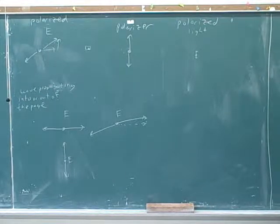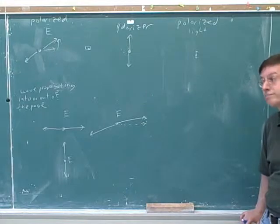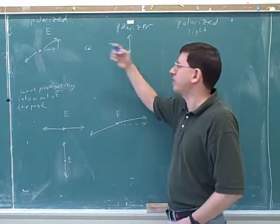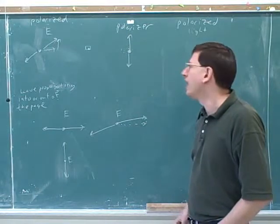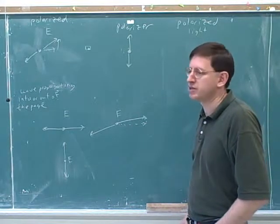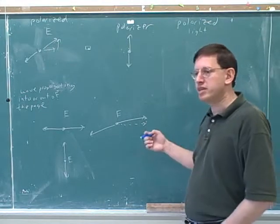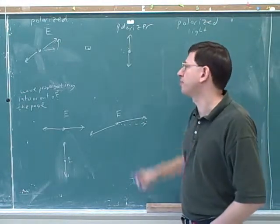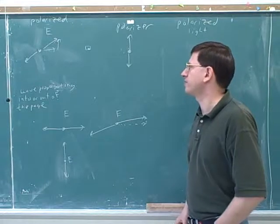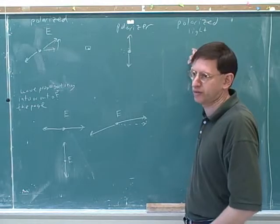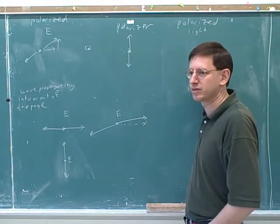Student: Is that why, when you turn the polarizer, it gets dimmer and dimmer — because the components are getting smaller and smaller? Yeah, precisely. There's a point when the polarizer is parallel to the electric field and the whole thing gets through. And there's a point where the polarizer is perpendicular to the original electric field and none of it gets through. But as you're turning the polarizer, the component of the electric field in the direction of the polarizer keeps getting smaller, and therefore the amount of light that gets through keeps getting dimmer and dimmer.